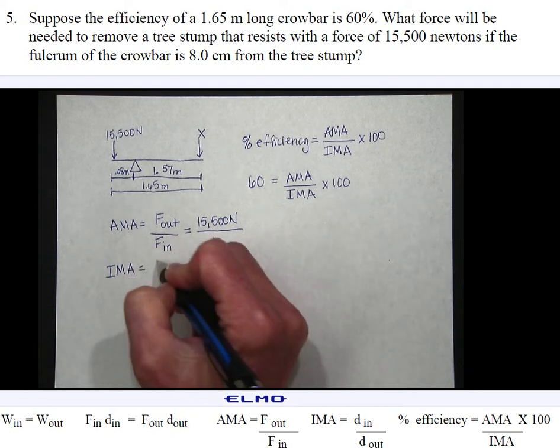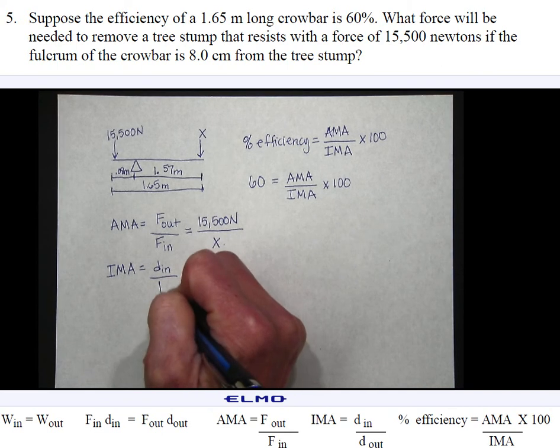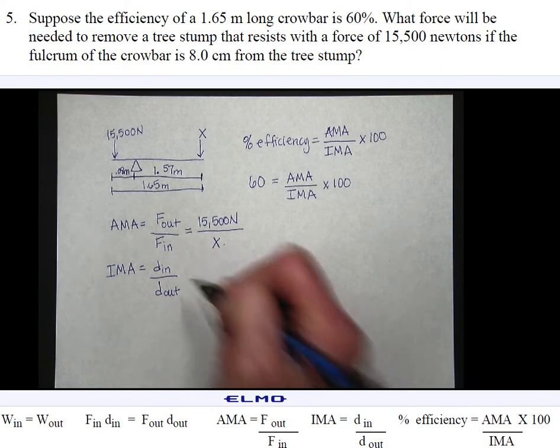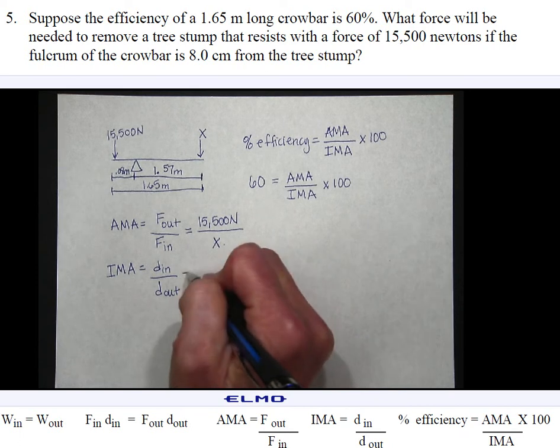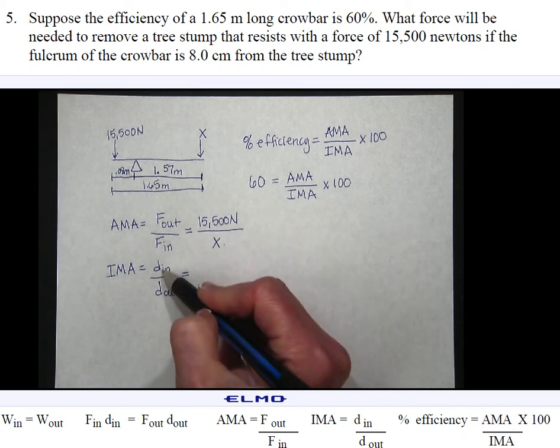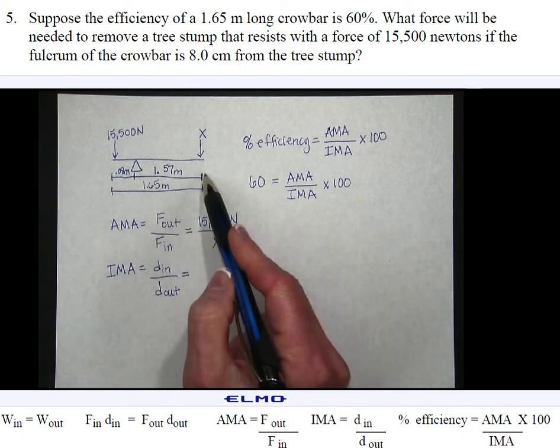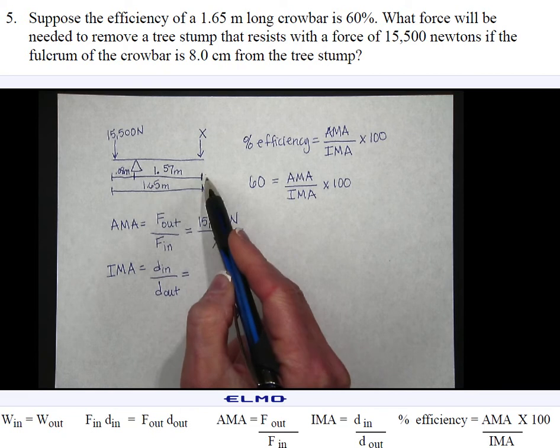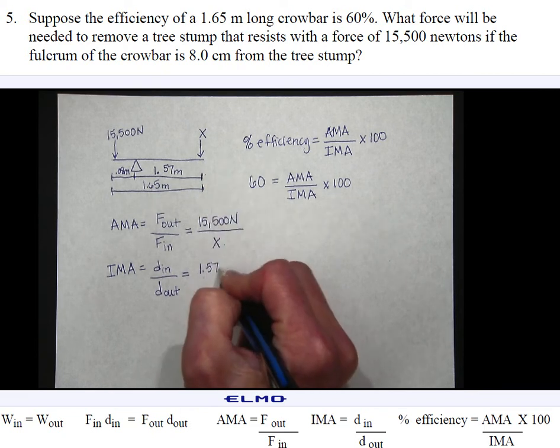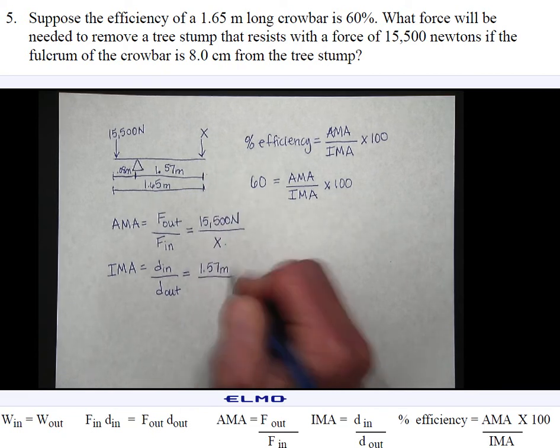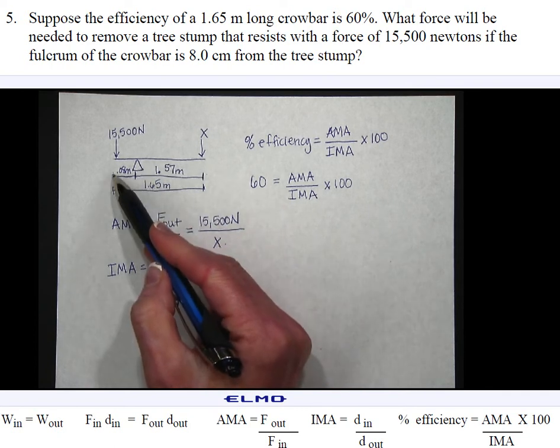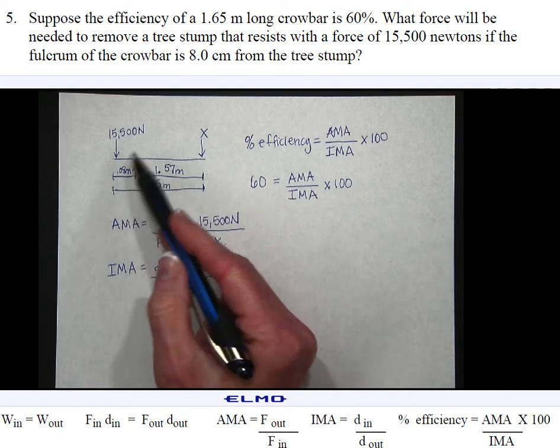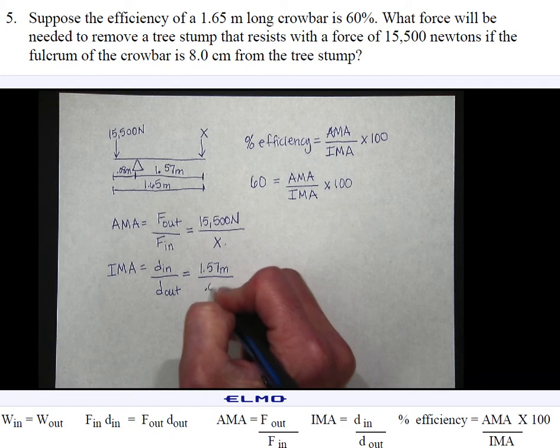Which is found by the distance of the effort or the distance in divided by the distance of the resistance or the distance out. The distance from the fulcrum to my effort force is 1.57. The distance from my fulcrum to my resistance force or to the tree stump is 0.08 meters.